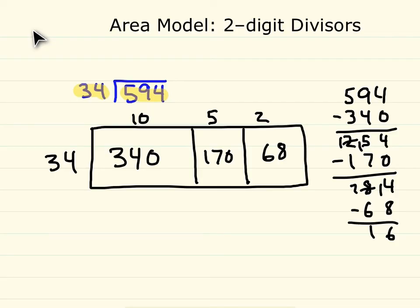We have our width of 10, 5, and 2. So our quotient is 17. We have a remainder of 16.